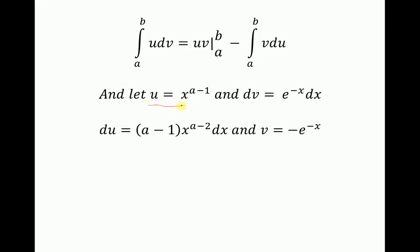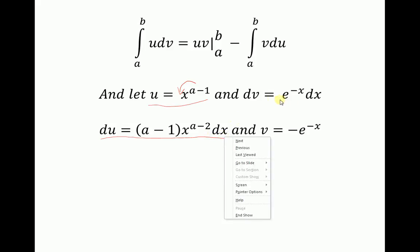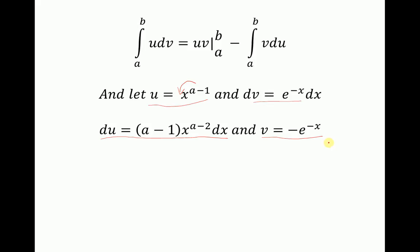If u equals x to the power of alpha minus 1, then we just take the derivative and we have du equals alpha minus 1 times x to the power of alpha minus 2 times dx. And since dv equals e to the power of negative x dx, we take the antiderivative and get v equals negative e to the power of negative x.